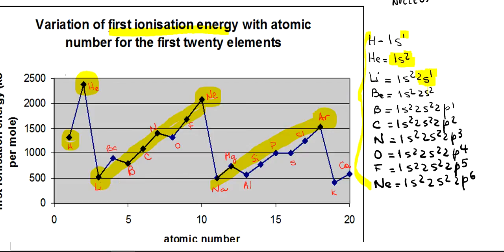The next element, beryllium, has the s sublevel of the second level completed. That's why it's even a little bit bigger than boron.